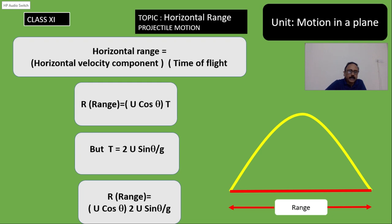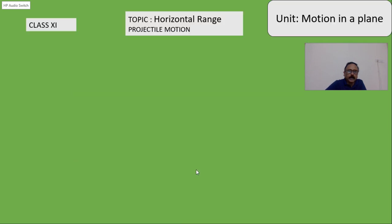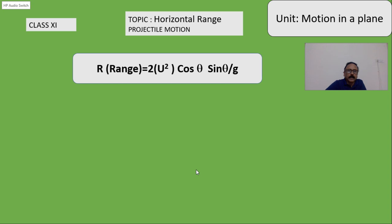Therefore, the range would be u cos θ and in place of this T, this 2u sin θ by g is replaced. If you look at this expression, 2u² cos θ sin θ by g. But we know 2 sin θ cos θ can be written as sin 2θ.